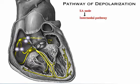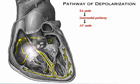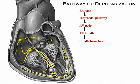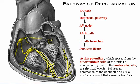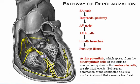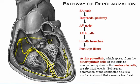The SA node initiates the depolarization impulse, which generates an action potential that spreads throughout the atria to the AV node. Here the impulse is delayed briefly before continuing on to the ventricles through the AV bundle, bundle branches, and Purkinje fibers. Action potentials spreading from the auto rhythmic cells to the contractile cells are electrical events. The subsequent contraction of the contractile cells is a mechanical event that causes a heartbeat.